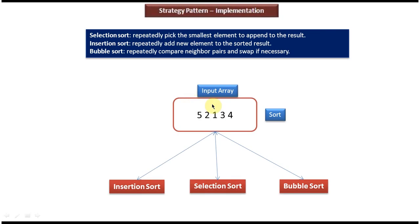Now we'll see the scenario where we can use the strategy design pattern. Here you can see an input array with five values. I want to sort the values in the input array, so I can use insertion sort algorithm, or I can use selection sort algorithm, or I can use bubble sort algorithm to sort the elements in the input array. So I have three options and from these three options I have to choose one in order to perform the sort.